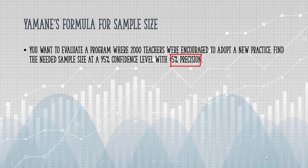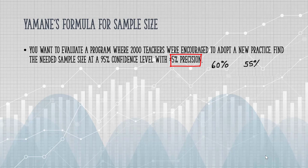The level of precision, or sampling error, is a range where we expect the true value of the population to be. Let's say we find that 60% of teachers in our sample have adopted the practice. At a 5% precision level, we can conclude that between 55% and 65% of teachers in the population have adopted the practice.